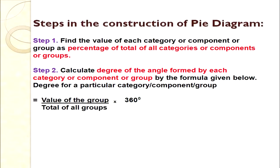The pie diagram shows percentage breakdown of data. Now we can discuss the steps in the construction of a pie diagram. The very first step is to find out the percentage of total for all categories. For this, take the value of each category, divide by the total values, and multiply by 100 to get the percentage of each category.